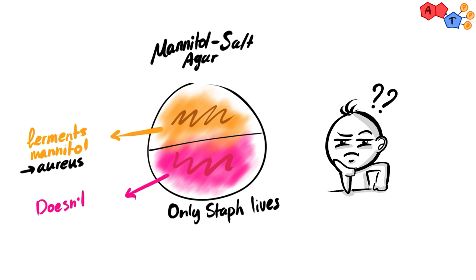Otherwise, the agar will turn pink, so although the bacteria is staph, it's not aureus — it could be epidermidis or saprophyticus.